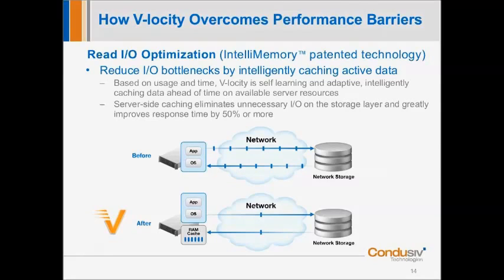Velocity also has a patented read IO optimization technology called IntelliMemory. IntelliMemory is a server-side DRAM caching engine that resides at the virtual machine's operating system layer, or the physical server in a non-virtualized environment. IntelliMemory reduces unnecessary IO on the storage layer and eliminates bottlenecks by intelligently caching frequently used data based on the application, its usage, and time. It's self-learning and adaptive, caching data ahead of time, greatly improving IO response times, and improving performance by up to 50% or more. This caching technology has been deployed by OEM partners across millions of systems worldwide.